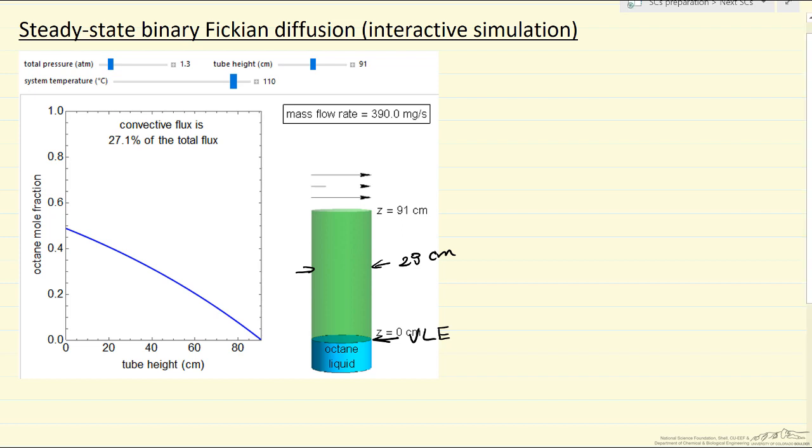What's important is we're looking at steady state diffusion so it's happened long enough that we can get to steady state. We have air that flows across the top and so here the octane concentration is going to be zero, because of the air moving across.